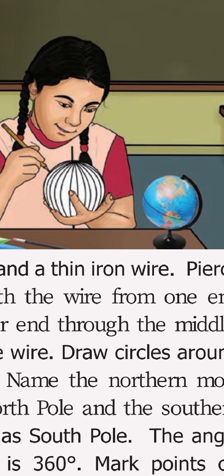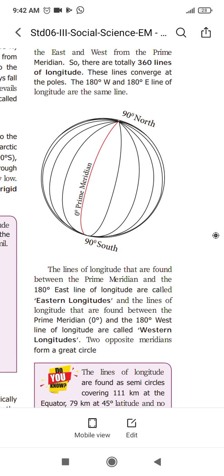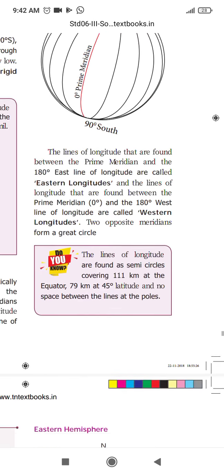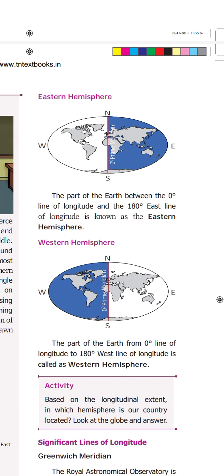The student has drawn lines on the ball with the help of the wire and is showing that they are longitudes. When shown a diagram, you should be able to identify whether a line is latitude or longitude, identify the red line as the prime meridian, identify 90 degrees as north pole or south pole, and identify eastern hemisphere versus western hemisphere. For example, North America is in the western hemisphere.